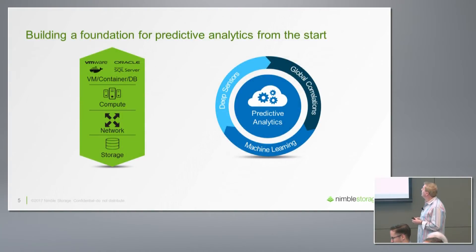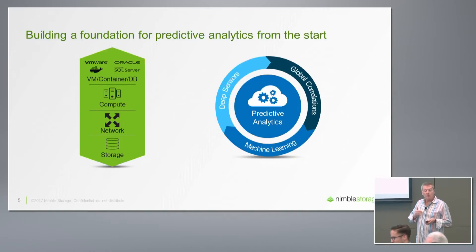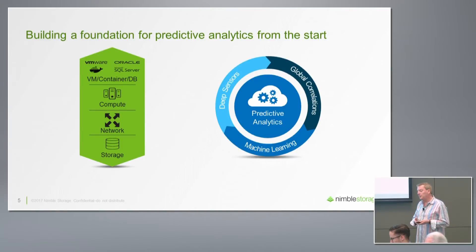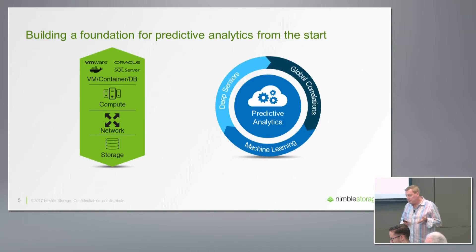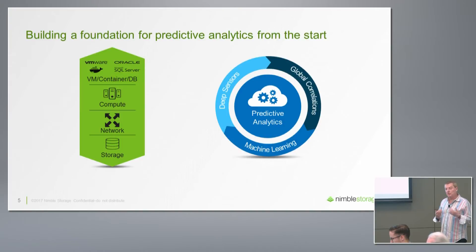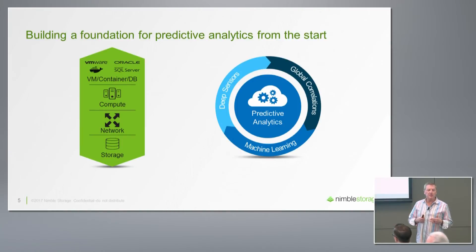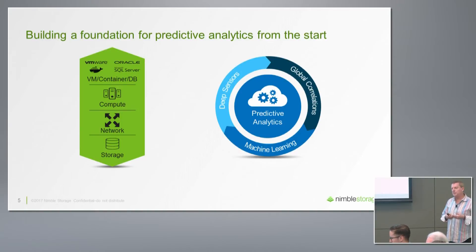Let's look back at what we've done here at Nimble. We started almost seven years ago collecting deep data. We have nearly 4,000 sensors embedded into Nimble OS and into the CASEL file system, and we've been collecting this information for almost seven years. In about a month, on April 15th — tax day — it's also a historic day for us, as it was the first day we installed a Nimble array, seven years ago.